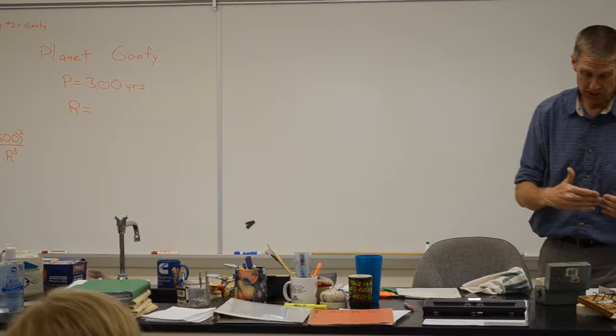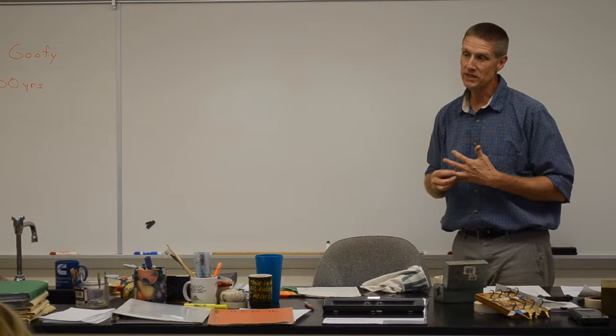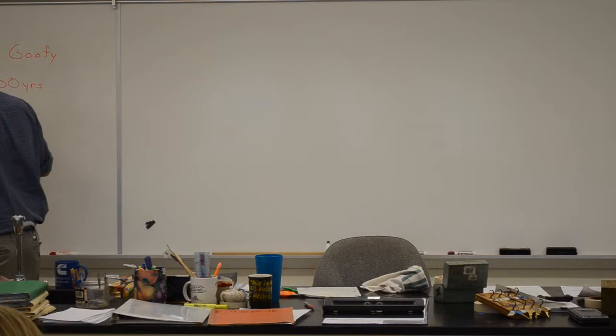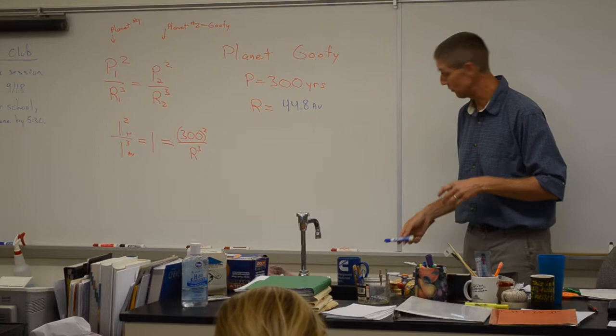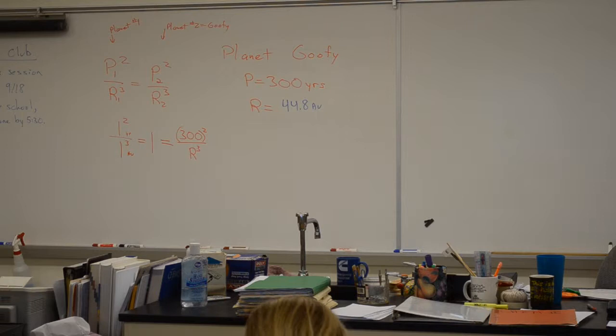If that left side equals one, then P2² / R2³ = 1, so P2² = R2³. Goofy's period is 300 years, so 300² = 90,000 = R2³. The answer is 44.8 astronomical units — 44.8 times further from the sun than Earth. If Pluto is around 40 AU, Goofy is outside it, which makes sense. To take the cube root on your calculator: if you don't have a cube root button, you can use x to the one-third power.